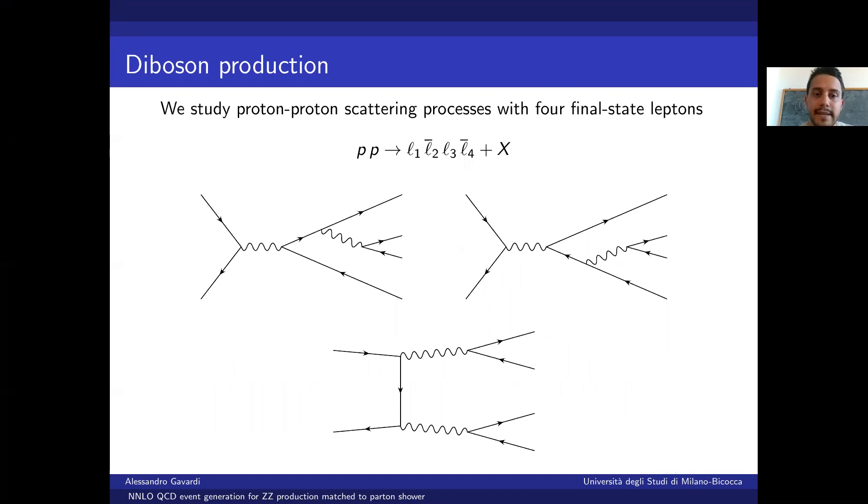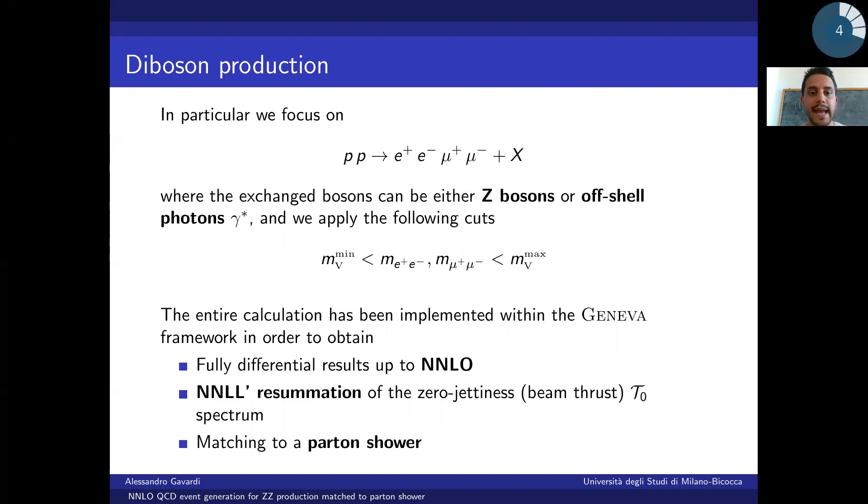Studying Z-boson production at the LHC is really the study of a proton-proton scattering process with four final state leptons. In this talk in particular, I will focus on the case where the exchanged bosons are either Z-bosons or off-shell photons gamma star. In order to keep the definition of the cross section finite, we will impose a minimum and maximum value for the mass of each boson.